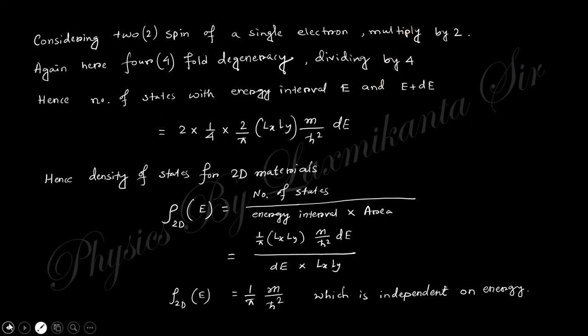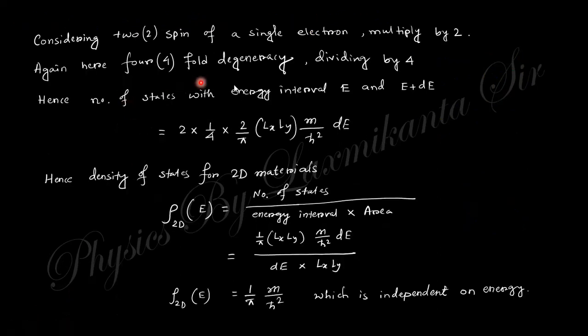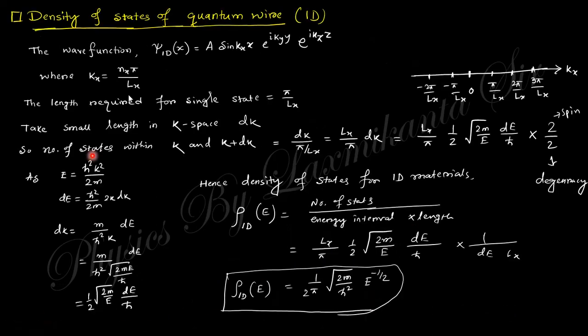Considering spin for a single electron, you need to multiply it by 2. And there are fourfold degeneracies, meaning at a particular k value, kx and ky have four options: plus-plus, minus-minus, plus-minus, and minus-plus. The k value is the same because these are squared, so there is fourfold degeneracy. You need to divide by one-fourth. Finally, you obtain this expression for the number of states per energy interval per area, which is independent of energy.